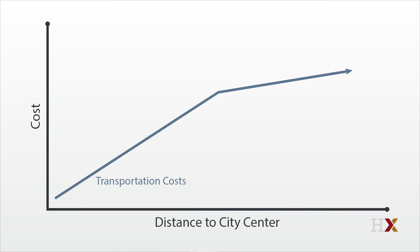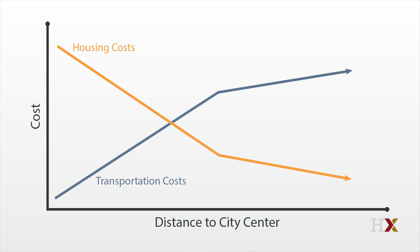What about housing costs? The same spatial equilibrium logic applies: total housing plus transport costs must be constant. Consequently, housing costs will first drop sharply with distance in the region where people walk, and then they level off and decline more slowly in the region where people drive. This model is generally supported by the data.